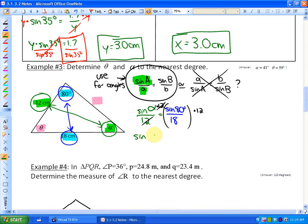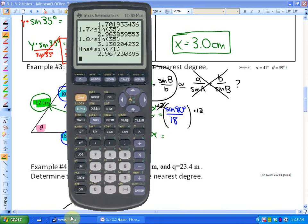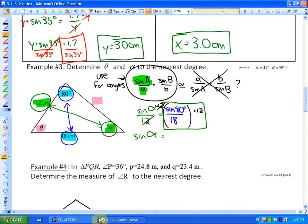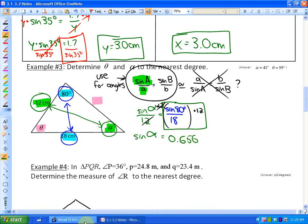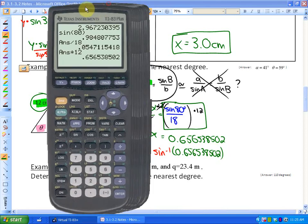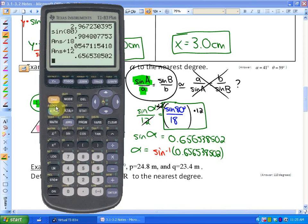So we'll have sin alpha is equivalent to, and again, overuse your calculator here. Hit equals as often as possible to make sure you're being careful. So I would do sin 80 and hit equals because that's a value. So there's my numerator. Now I divide that by 18. That's my proportion. And now I can times by 12. That's doing that whole thing in one step. So it's 0.656538502. Now that's what sin alpha is equal to. In order to solve for the angle, the opposite of sine is the sine inverse. So if I want to get my solution for alpha, I'm going to have to take the sine inverse of 0.656538502. So in order to do that, I'm just going to press sine inverse. So that's sine inverse is above sine. So I'll press second sine. There's sine inverse.